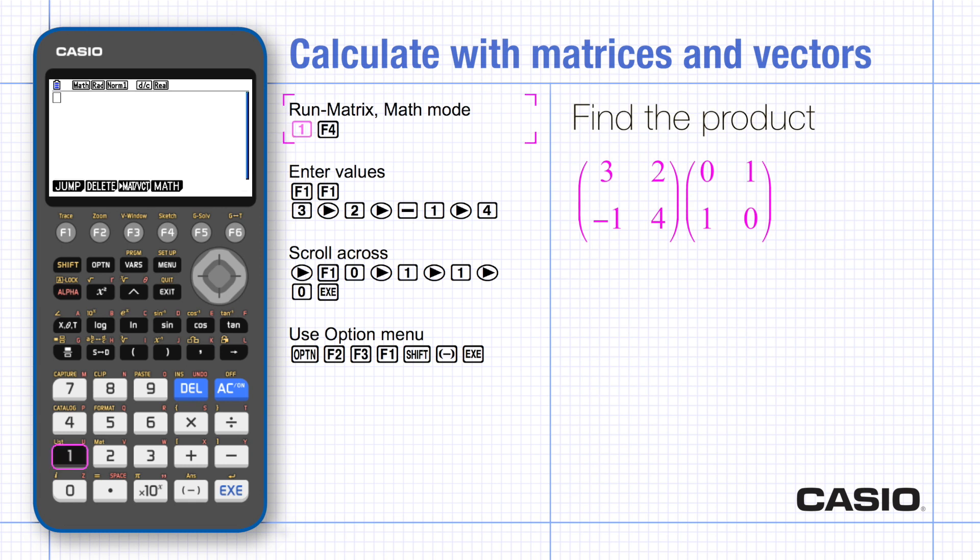Looking at the quick method first, choose Run Mode. Go to Math rather than Matrix Vector on the first menu, but choose Matrix Vector from the next menu. 2x2 gives the matrix template. Type the values, scrolling rather than using Execute to complete the matrix.